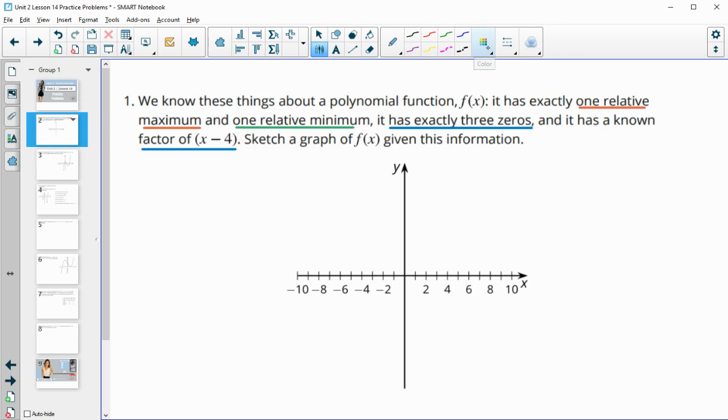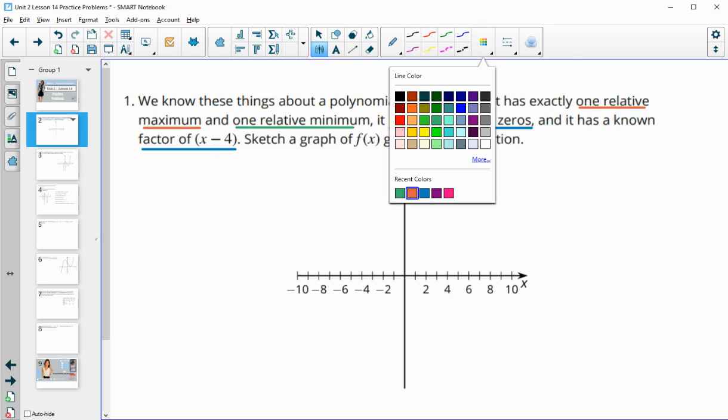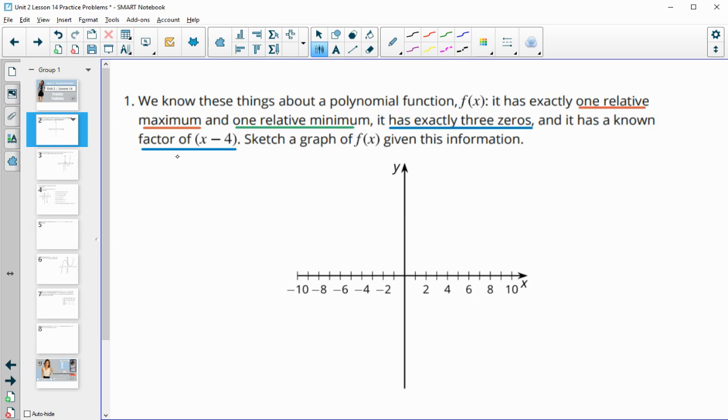We know one of the zeros because it gives us a factor of x minus 4. If we solve x minus 4 equals 0, we add 4 to both sides, and we know that this crosses at positive 4.